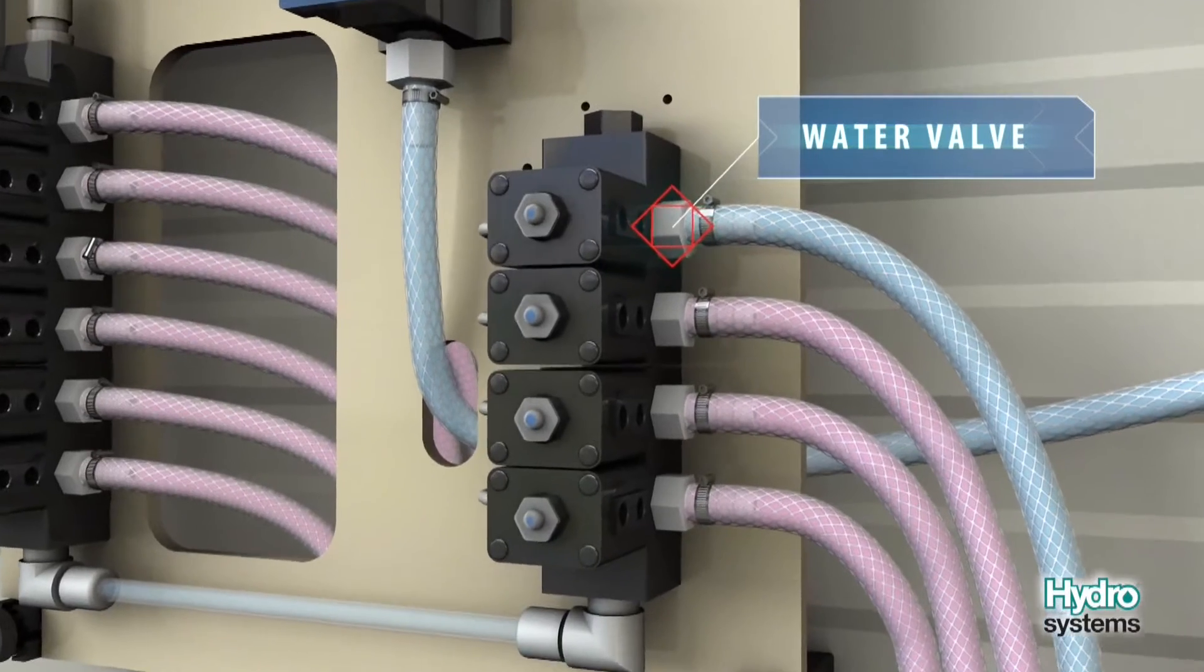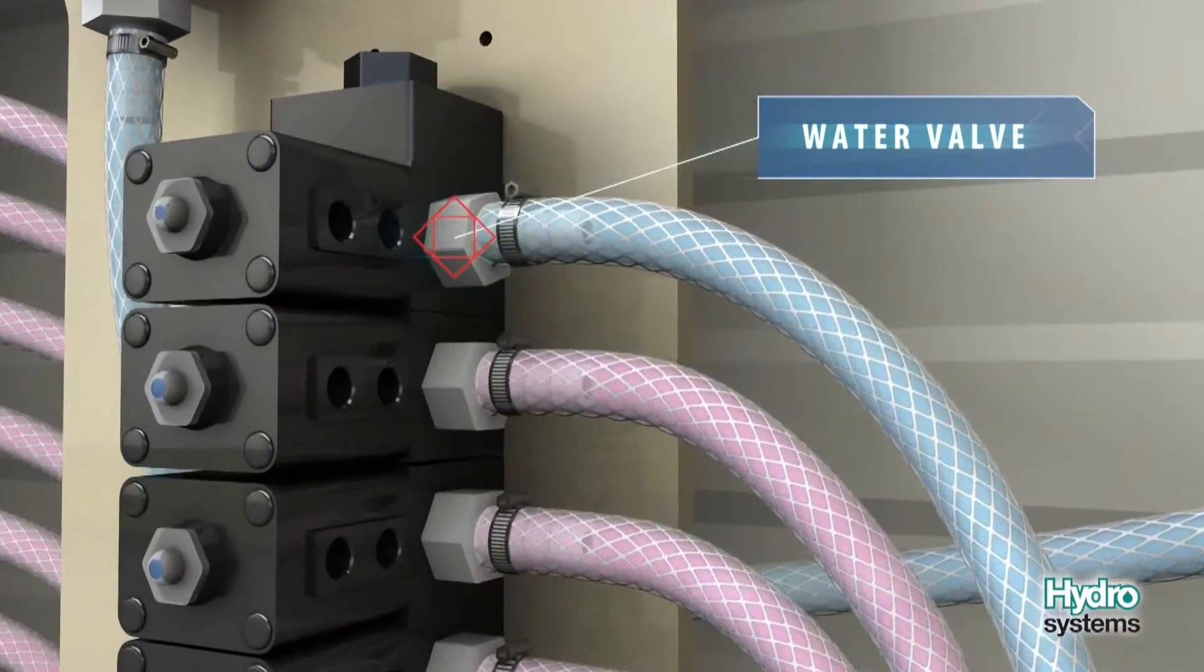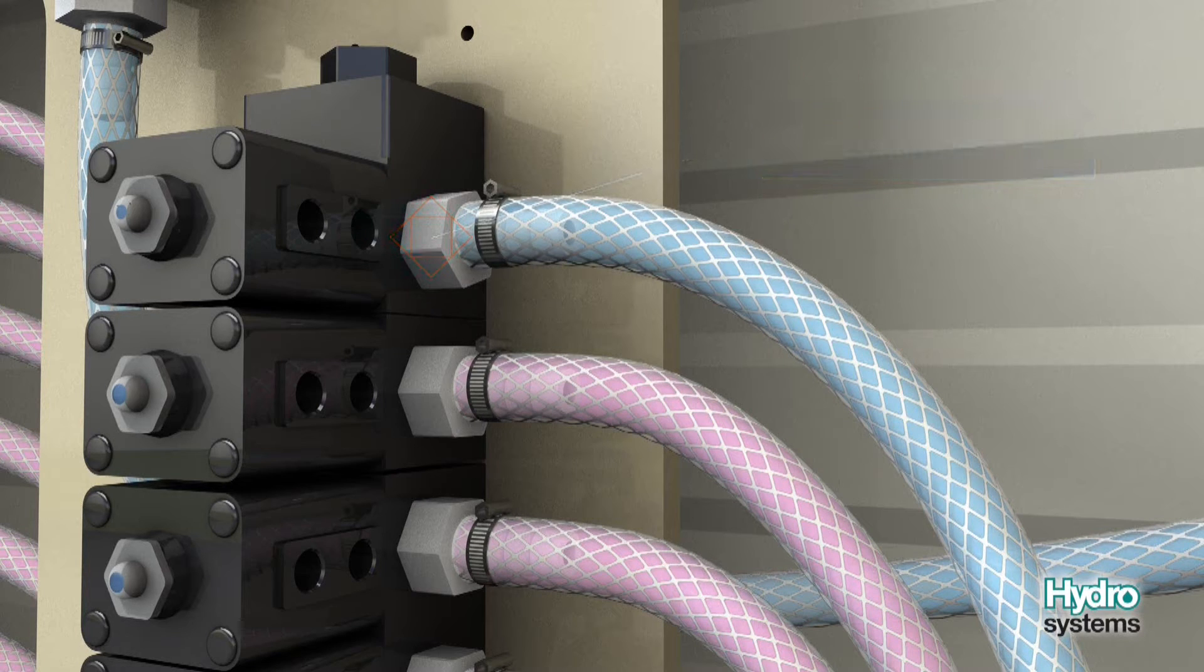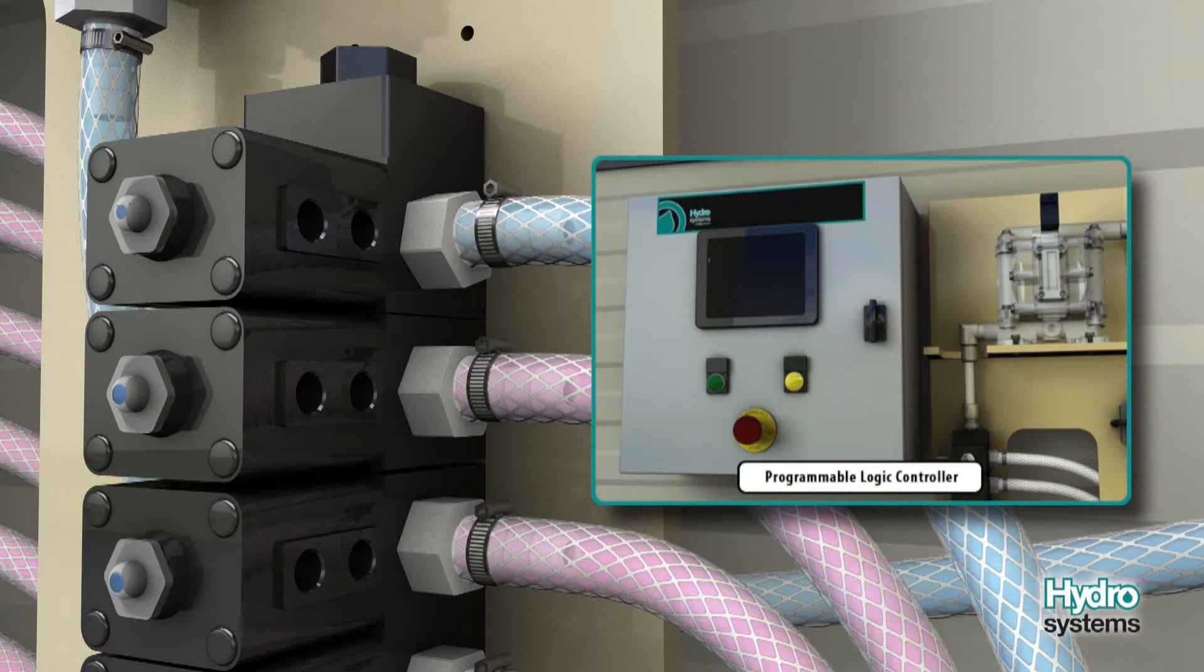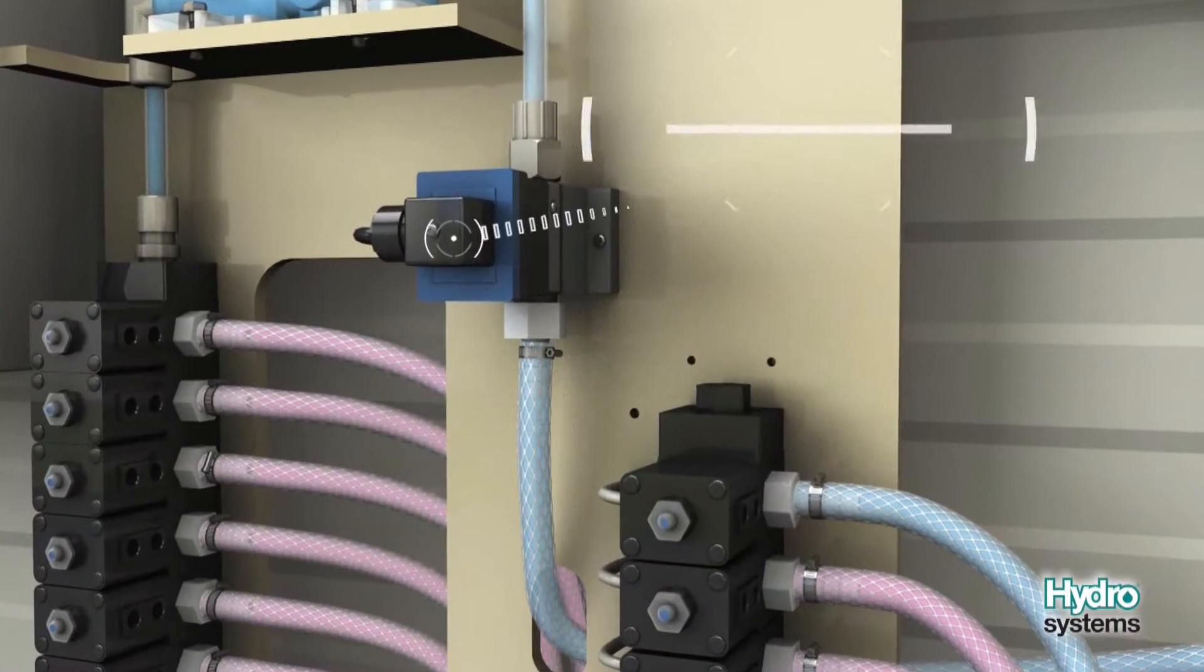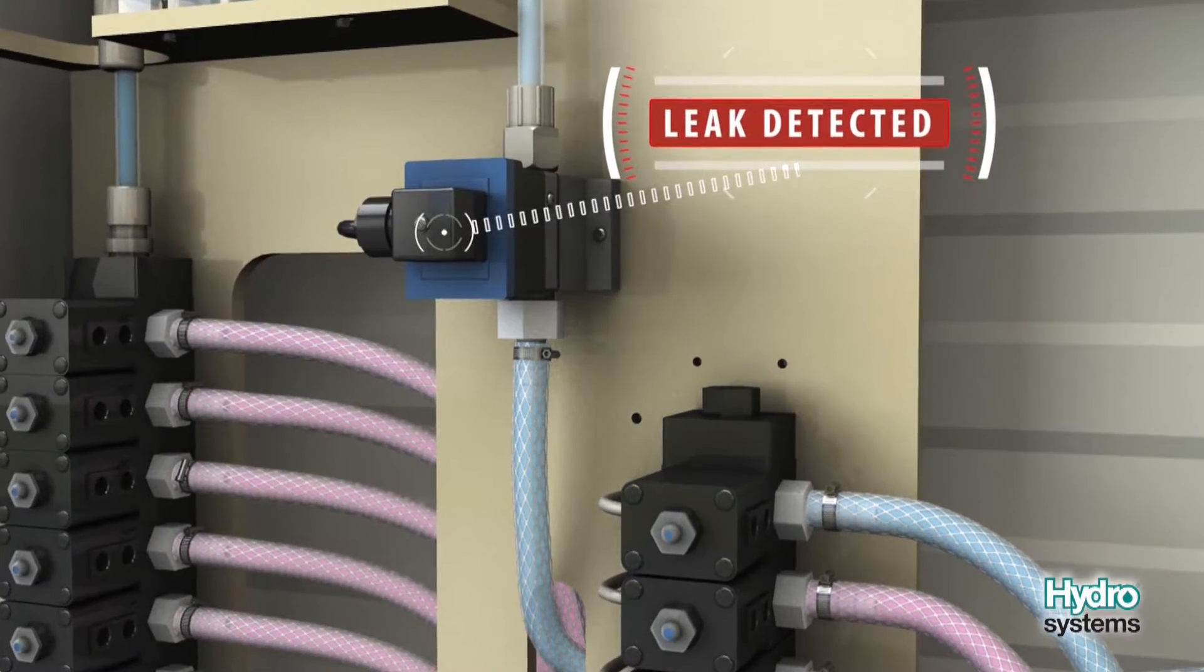During the leak test, the water valve opens at the collector which pressurizes the channel, while the product valves and the distributor valves remain closed. If the Programmable Logic Controller detects pulses from the flow meter, that means there is a leak and the dosing is aborted.